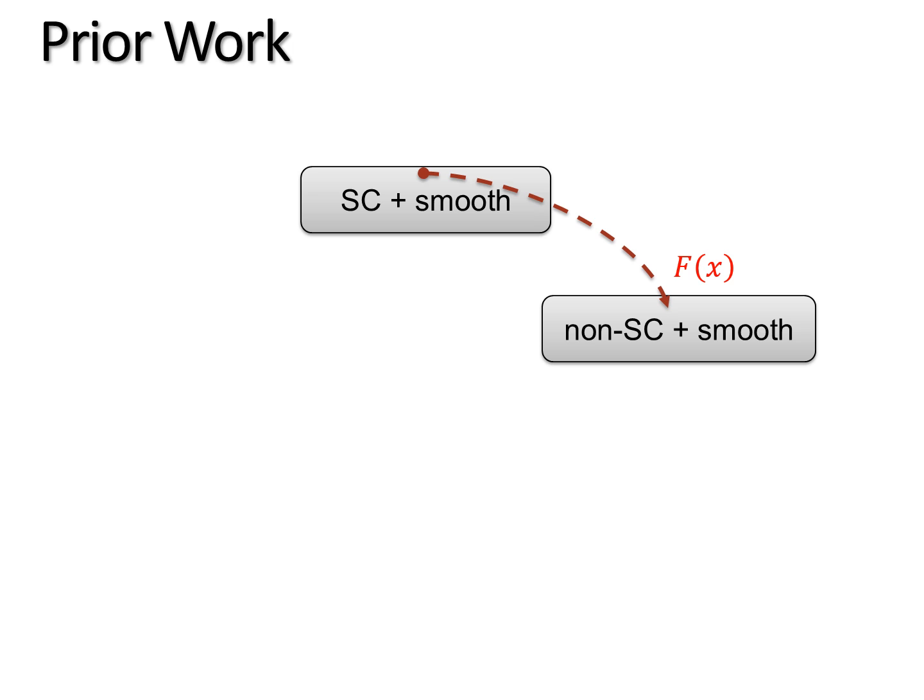Take a non-strongly convex function f(x), then add some strong convexity, add epsilon times the Euclidean norm square, and call this function f prime.